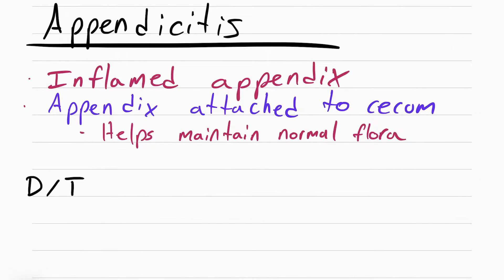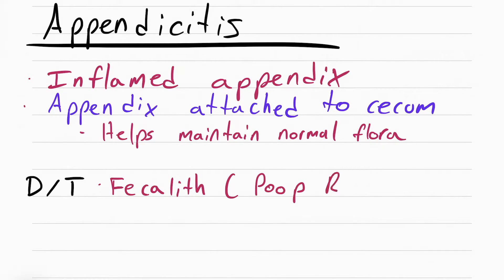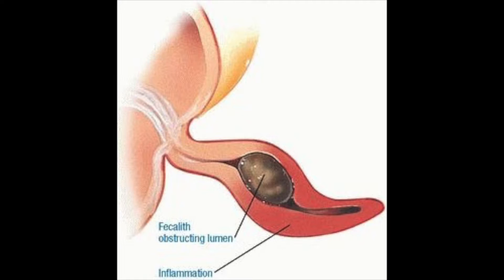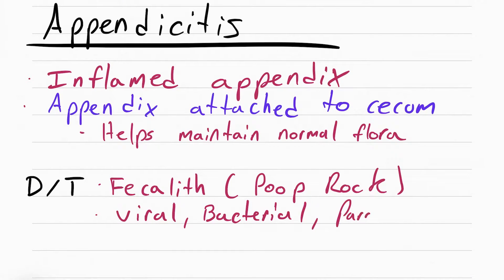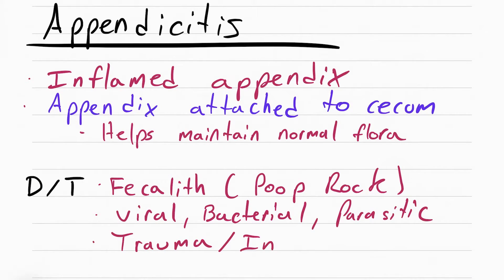What causes the appendix to get inflamed is sometimes called a fecalith, which is a poop rock. A little poop rock can get stuck inside the appendix causing the inflammation, but it can also be a viral, bacterial, and parasitic infection, as well as trauma and injury.